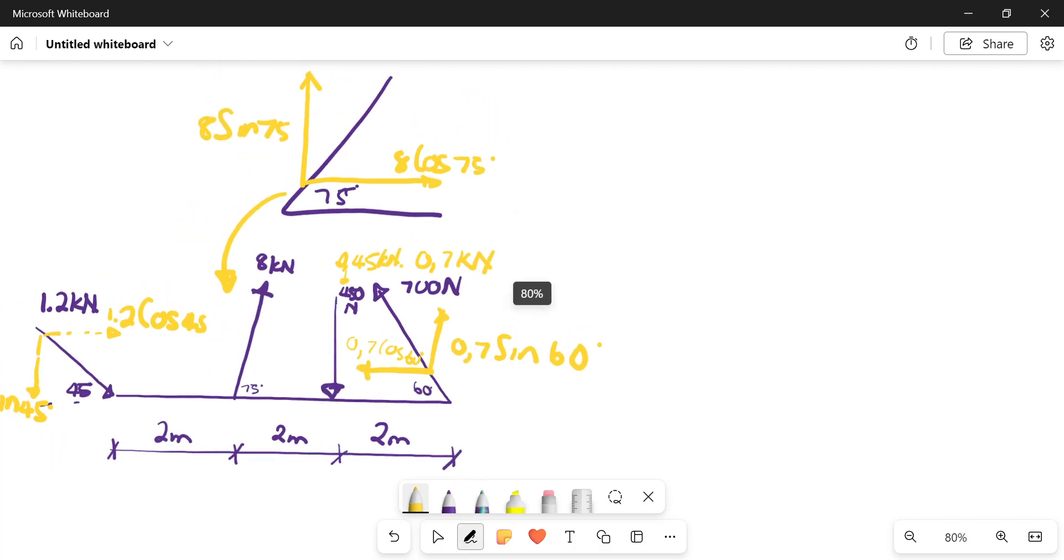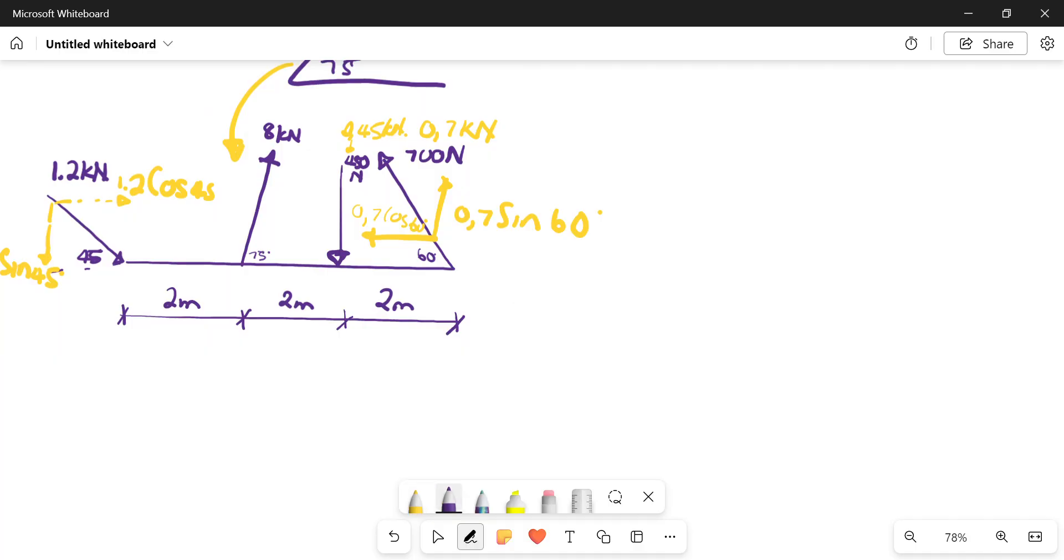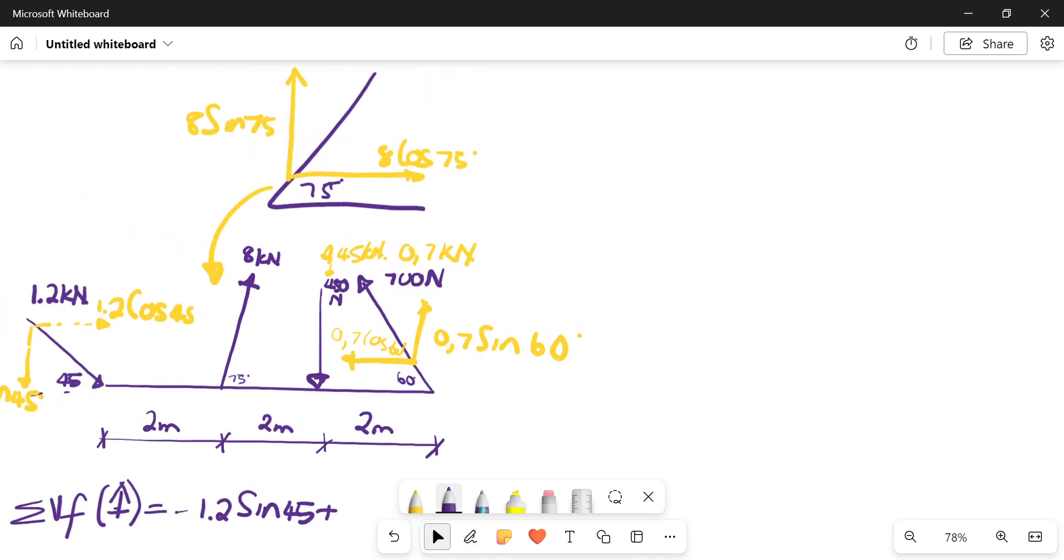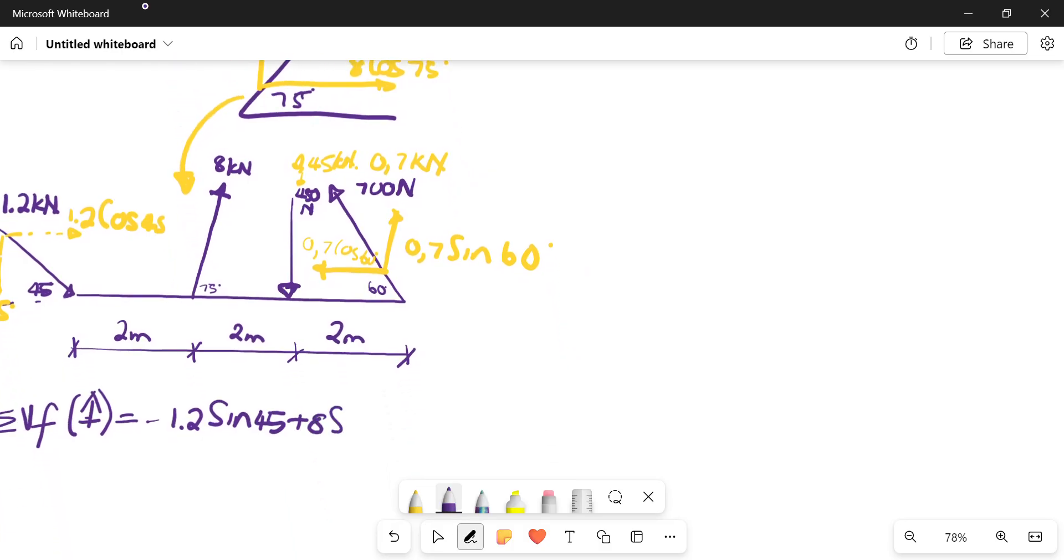From this point on, essentially you will be taking the sum of your vertical forces. Assume the direction - assume that it's pulling up. We have negative 1.2 sin 45 because it's pushing down, then we have plus 8 sin 75 over there. Then we have minus 0.45 because it's completely straight, so we don't need a component on there.